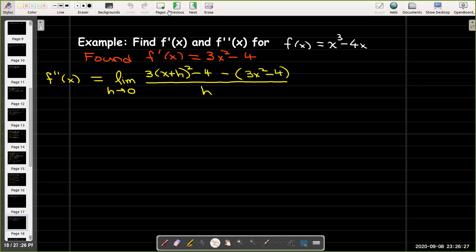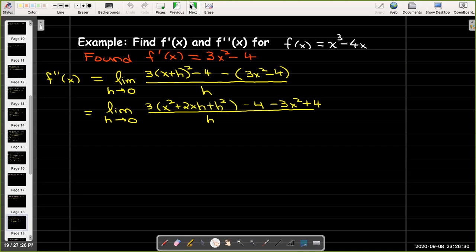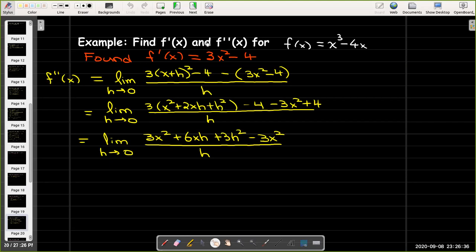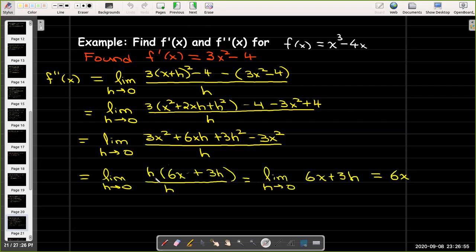Again, I'll do some algebra. I expand, remove parentheses, and collect like terms. The 3x² - 3x² cancels to 0, and what's left over is 6xh + 3h². Those two terms have a common factor of h, so I factor that out. That means h/h = 1. Now I can use direct substitution, and I'm left with 6x. So the second derivative is f''(x) = 6x.